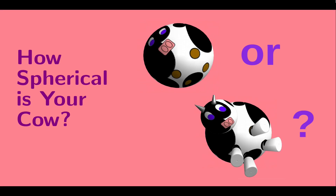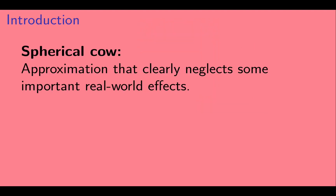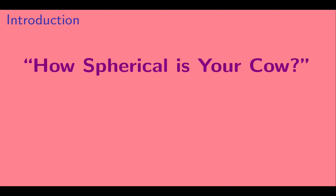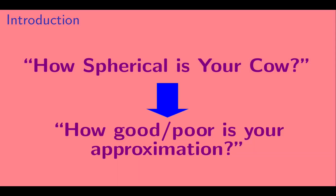Welcome to How Spherical Is Your Cow? Let's start with defining a term used in physics circles: the spherical cow. A spherical cow is an approximation that clearly neglects some important real-world effects. It's pretty clear that a real-world cow is not a sphere. So in asking the question, how spherical is your cow, what I mean is: how good or poor is your approximation?